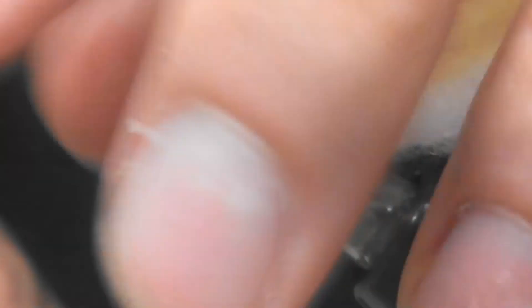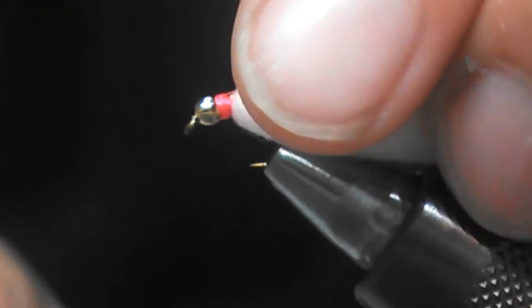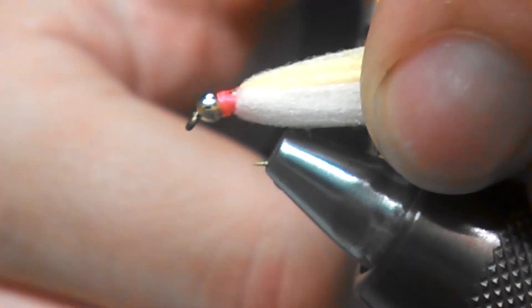So we're going to groom this down across the hook shaft. Try to get a pull back. You don't need to pull it particularly tight. We're really just grooming.